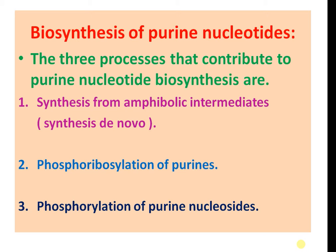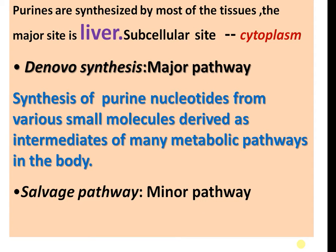Hi, this is Ambrad and today we are discussing Purine Metabolism. The biosynthesis of purine nucleotides involves three processes: synthesis from amphibolic intermediates, synthesis de novo, and phosphoribosylation of purines and phosphoribosylation of nucleotides.